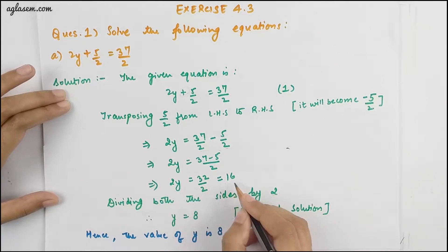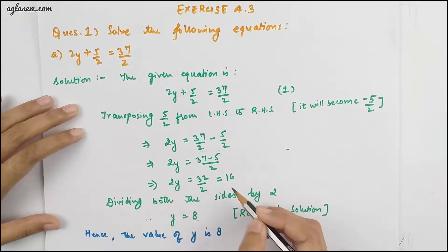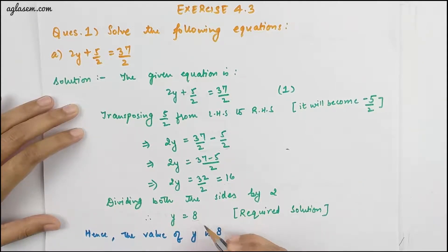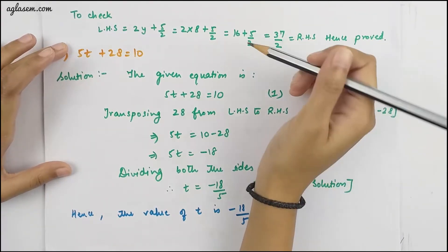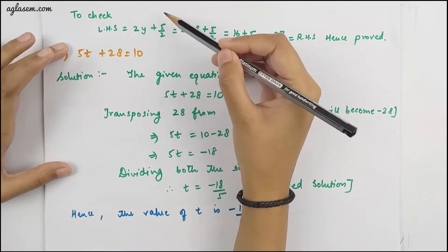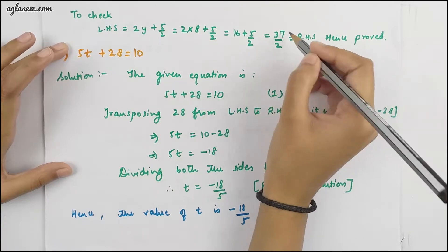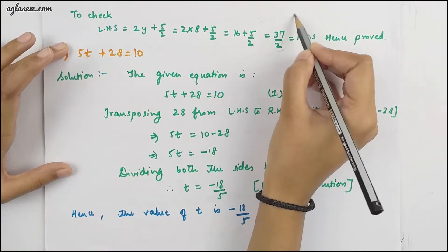2y = 16. To get the value of y, divide 16 by 2, giving us y = 8. Hence the value of y is 8. To check our answer, we put y = 8 into the given equation and confirm that LHS equals RHS.